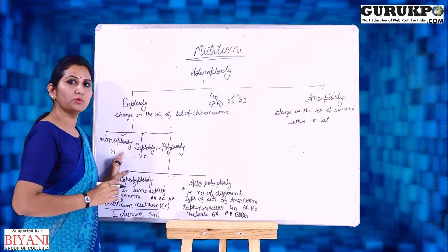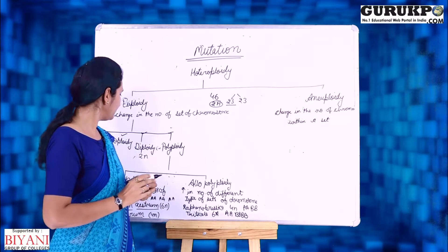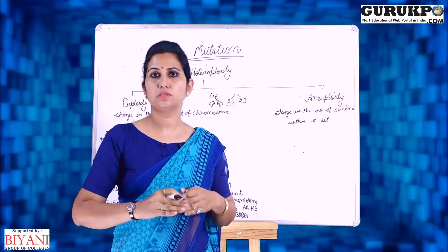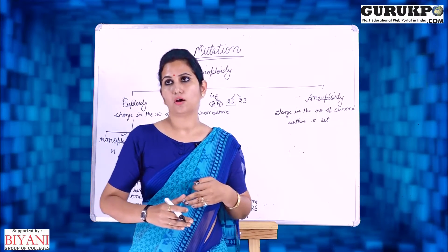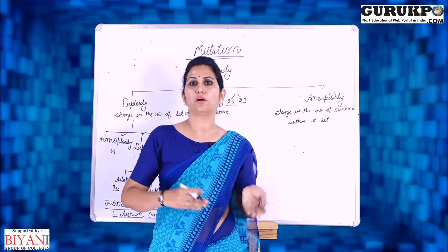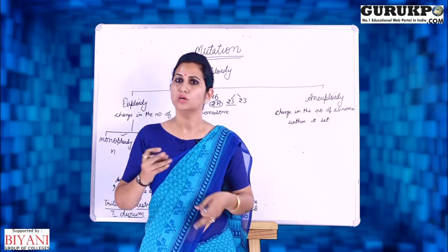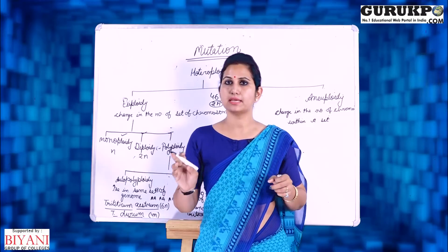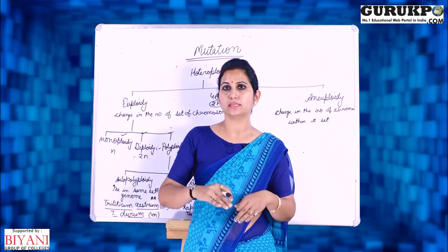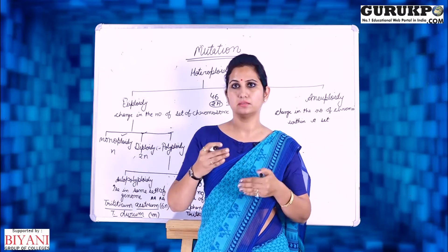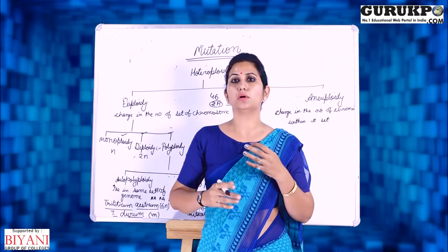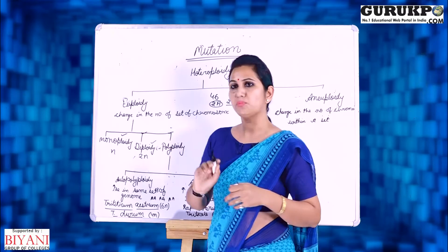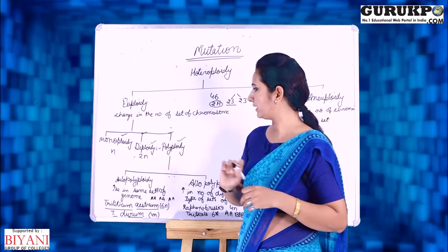The first is monoploidy: if the chromosome set was originally diploid or tetraploid, it reduces to just one set. The second is diploidy: if the sets were more or less in number but increase or decrease to a diploid condition, such mutation is known as diploidy. The third is polyploidy.